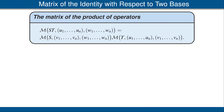Throughout these videos and throughout the book, I've taken the attitude that we start with an operator on some vector space and then try to find a basis such that the matrix of the operator has a nice form — for example, upper triangular form. In my opinion, this viewpoint is the most productive way to approach linear algebra. But now we need to shift our viewpoint a little bit and think about how the matrix of an operator changes as we change bases.